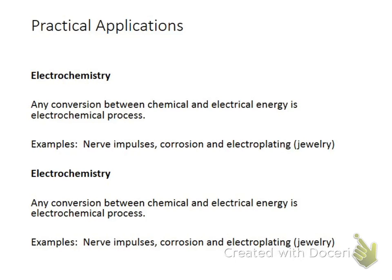Electrochemistry is what we're going to mainly be talking about today. That's what we're going to be doing tomorrow in the lab is some electrochemistry, and that is any conversion between chemical and electrical energy. It's an electrochemical process. Some of the examples in your body are nerve impulses. We have corrosion and electroplating. A lot of jewelry is electroplated, and so it makes it not turn yourself green or whatever. And then, of course, electrochemistry. Why? That's on there twice. I'm not really sure. I guess I really wanted you all to know that.